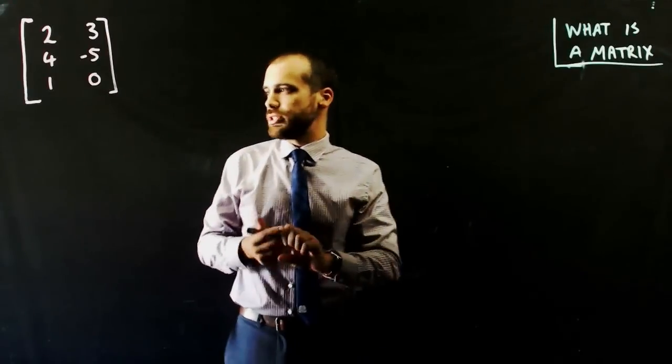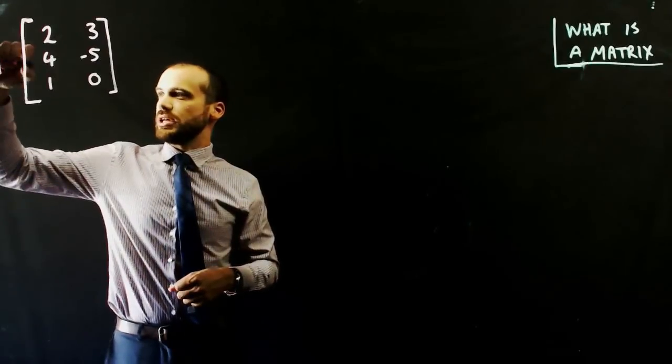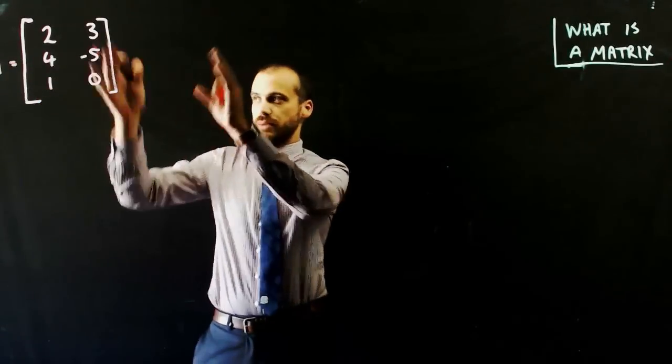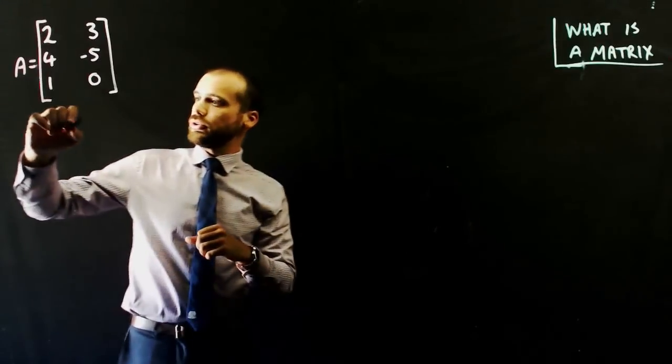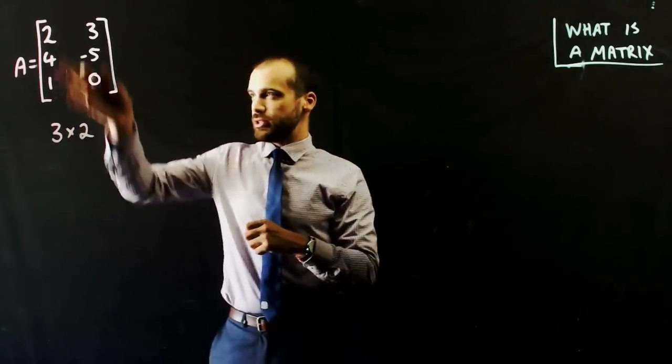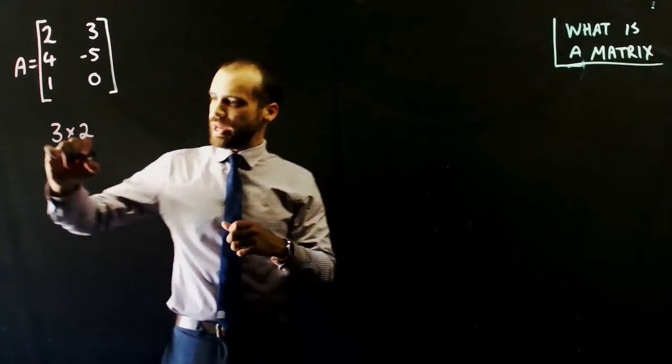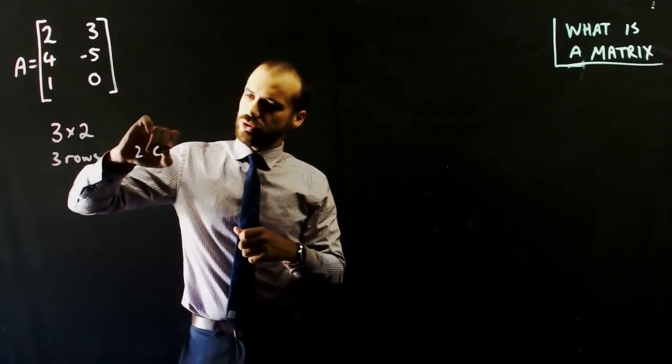Now this particular matrix, let's call this matrix matrix A. So we can just say A equals this matrix. This particular matrix is called a 3 by 2 matrix, and it's called a 3 by 2 matrix because it has 3 rows and 2 columns.